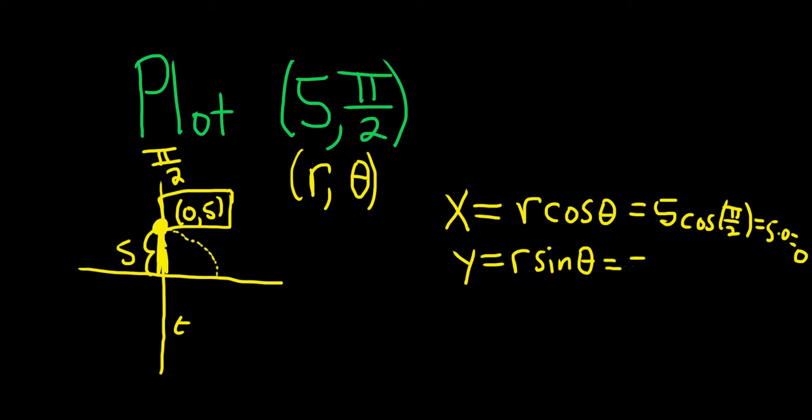For y, you get 5 sine pi over 2. Sine of pi over 2 is 1, so you get 5 times 1, which is 5. So your x is 0 and your y is 5, giving you 0 comma 5.